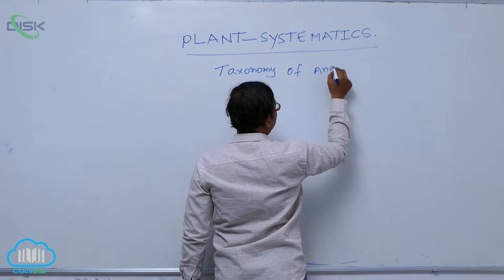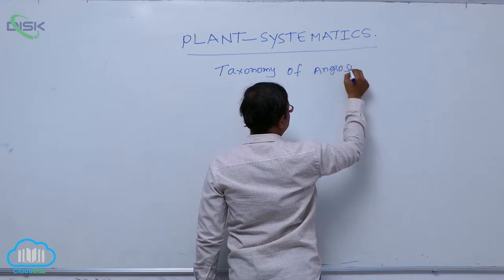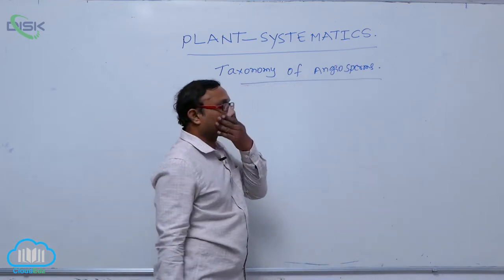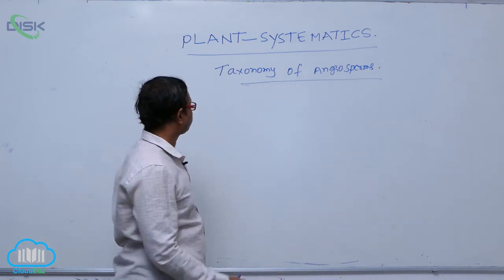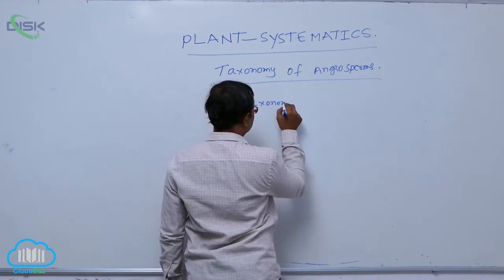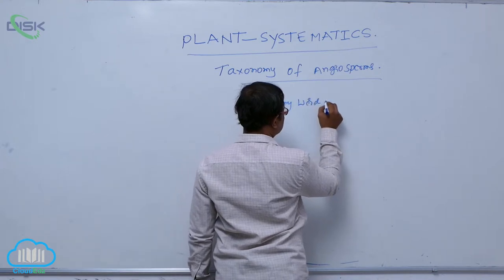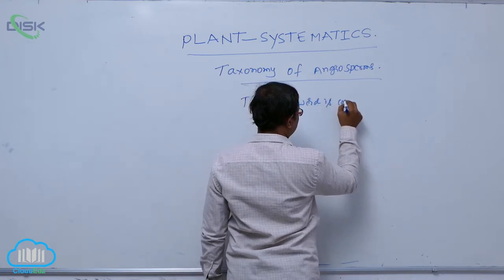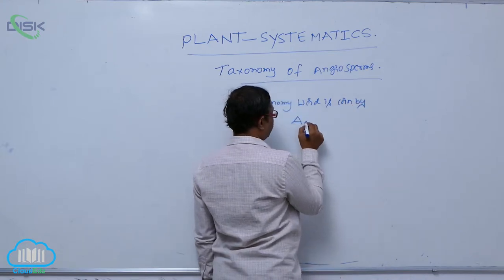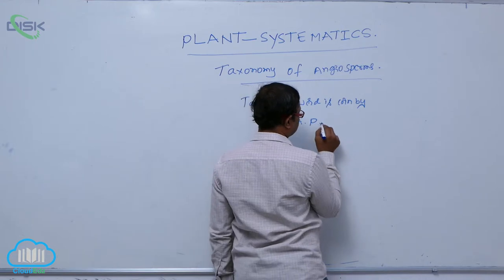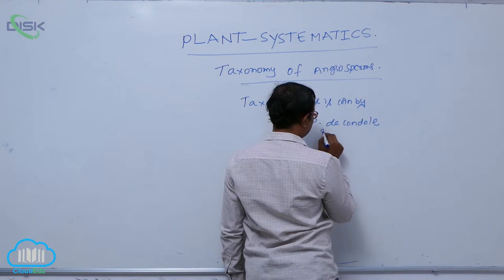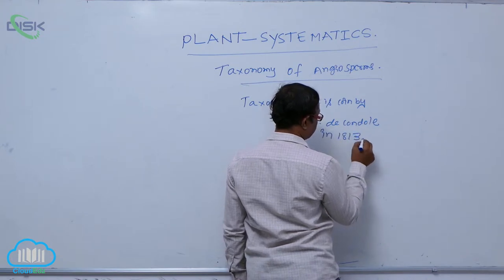Chapter: Taxonomy of Angiosperms. The word taxonomy was coined for the first time by APD Candolle, a scientist, in 1813.